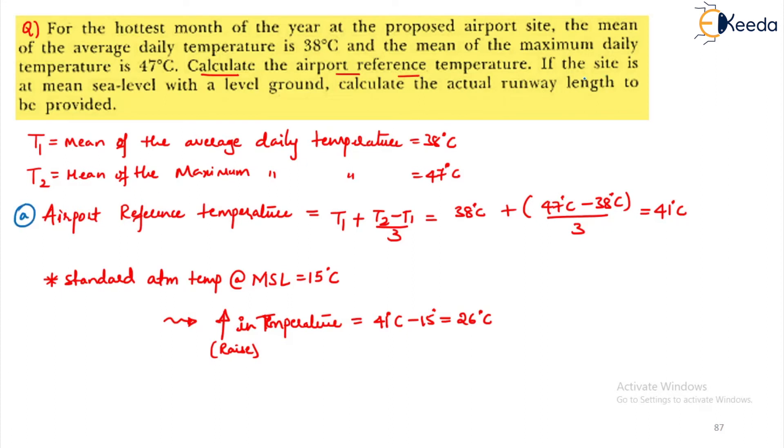If you continue reading the question, if the site is at the mean sea level level ground calculate the actual runway length to be provided. Let us take the basic runway length as equal to L meters because there is a level ground you will not have gradient and also elevation is not specified it is at the mean sea level.